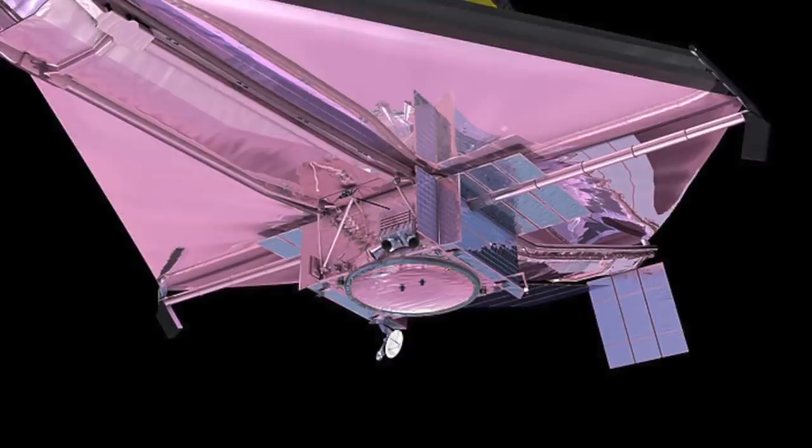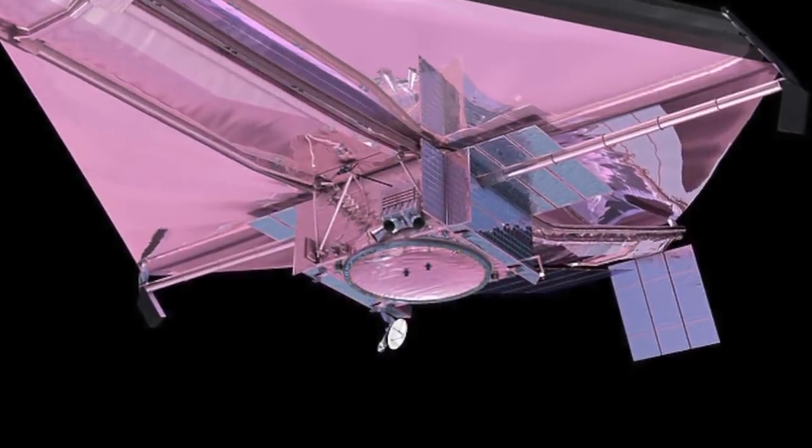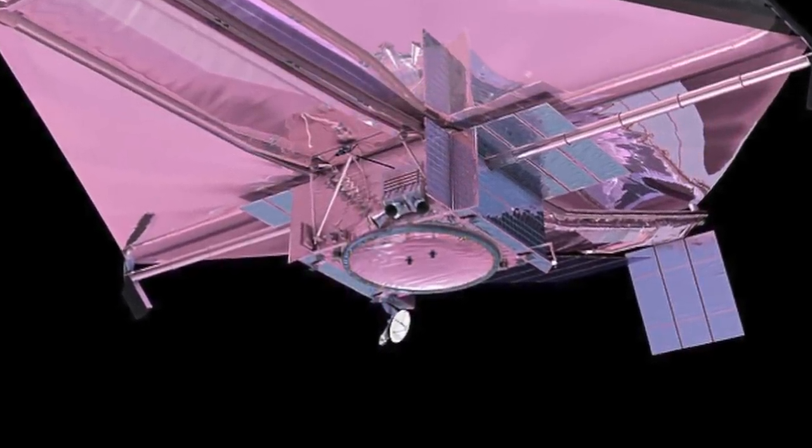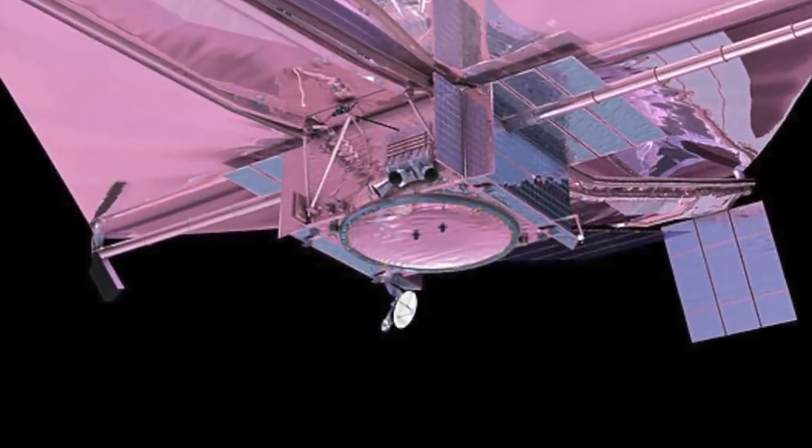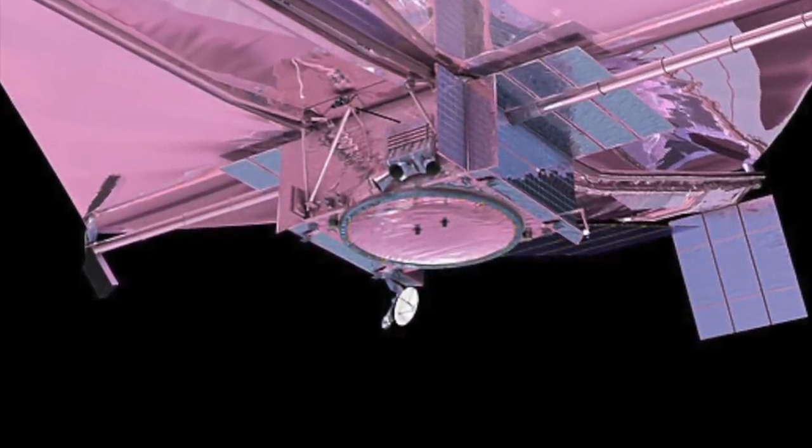After that came the deployment of a momentum flap, designed to help mitigate pressure from the solar wind, and the telescope assembly itself raised up about four feet. All went well, and then came the scariest part, the unfurling of the sunshield.